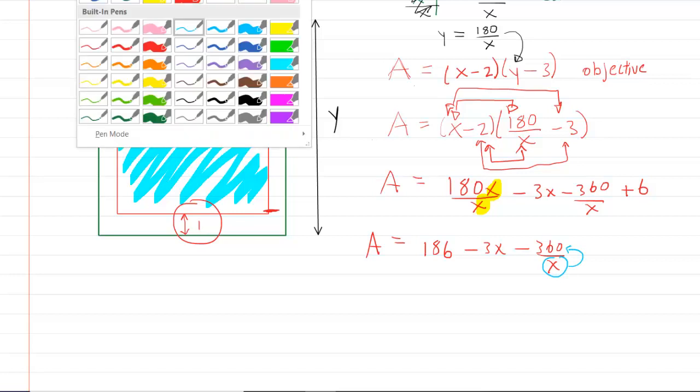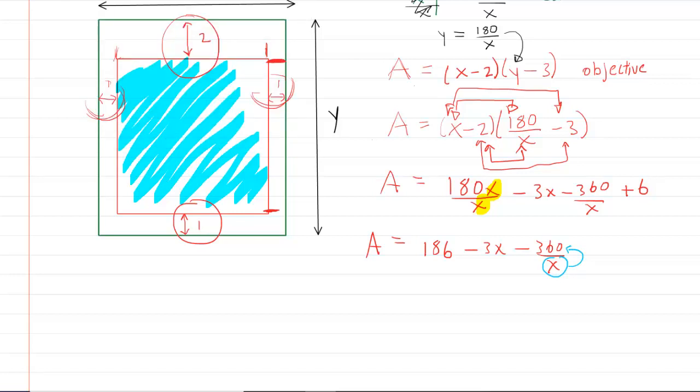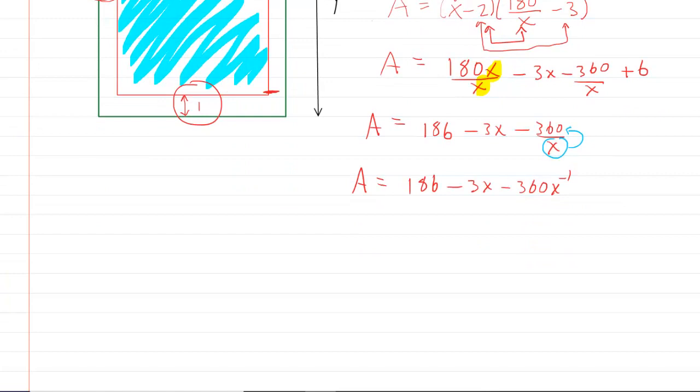It just makes computing the derivative a lot easier. So we will have the area equaling 186 minus 3X minus 360X to the negative 1. And now we're going to do the derivative.